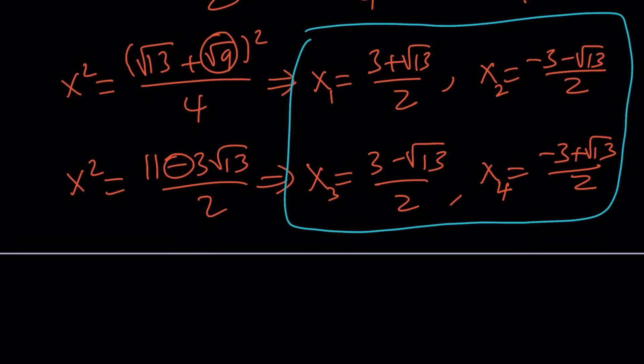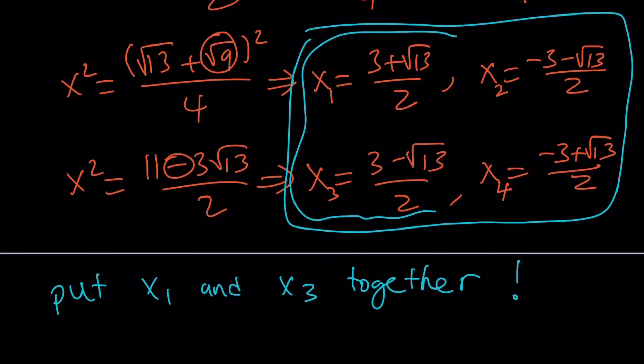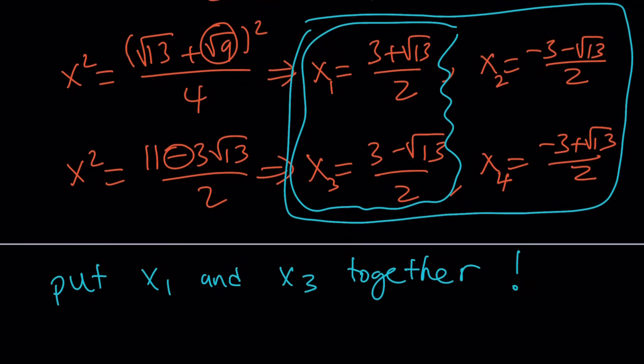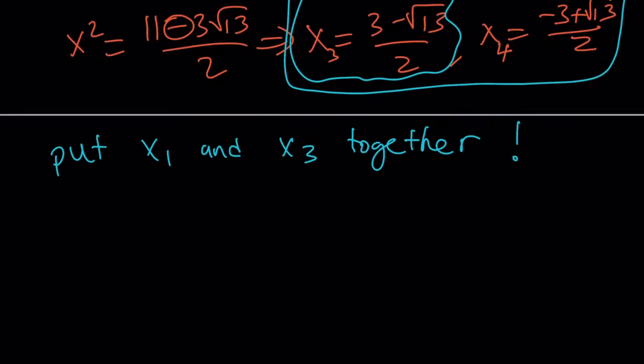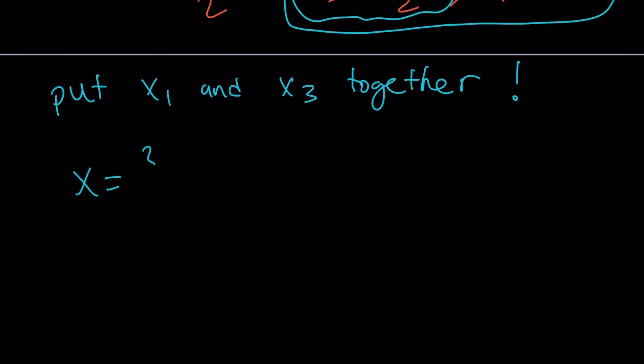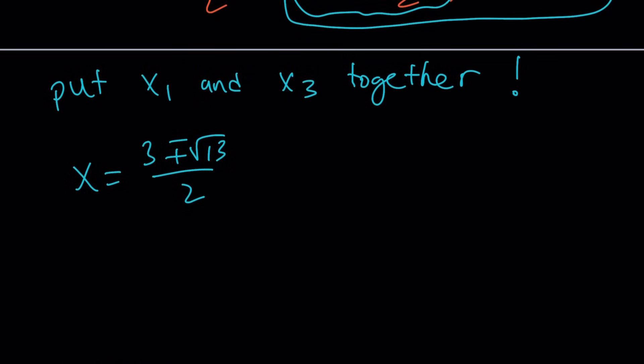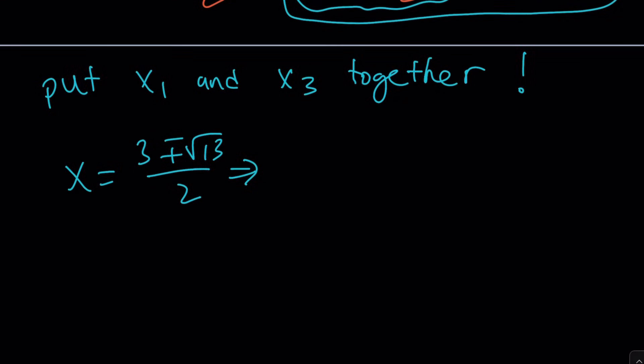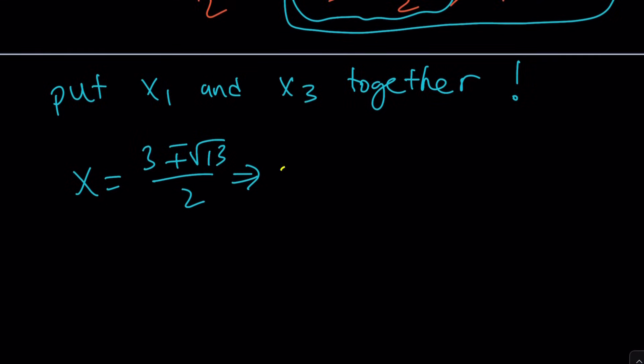So now I want to put x sub 1 and x sub 3 together. And you might be asking, like, why? Because it's fun. Of course, not just because it's fun. Because they are conjugates. Look at that. Awesome. Of course, it's true for the opposites too. But let's just deal with these two because the others are similar. Now take a look at this. x sub 1 and x sub 3 are conjugates. So let's write them together. We can just use the plus minus sign. That's because they're conjugates. And then from here, I want to do a little bit of algebraic manipulation. Don't manipulate people, but manipulate expressions. That's my motto. Anyways, multiply by 2.